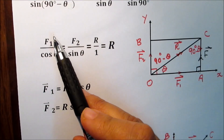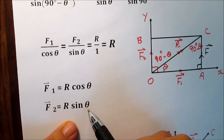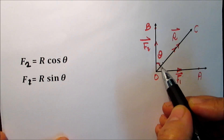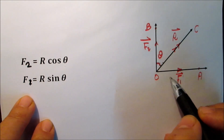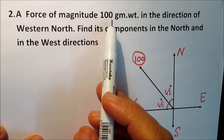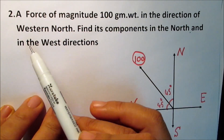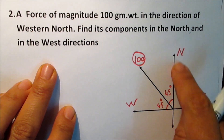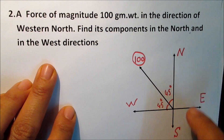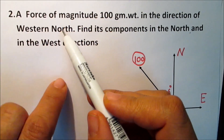Cross multiplying to get F1 and F2: F1 equals R·cosine(theta) and F2 equals R·sine(theta). Now for the first example: the western north direction.